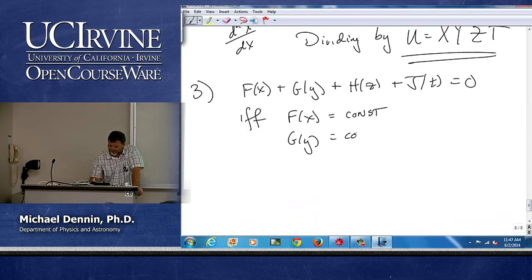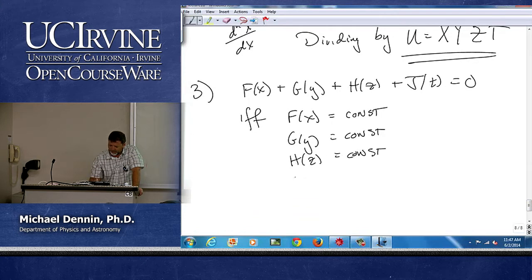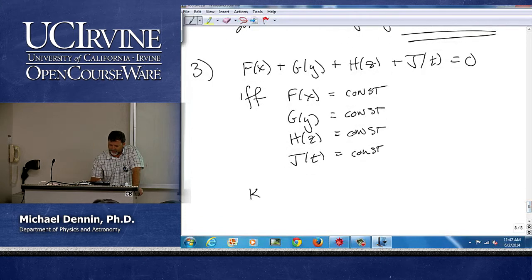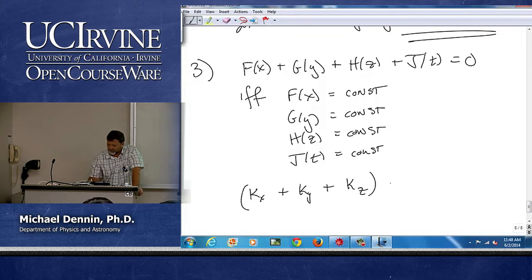g of y equals a constant, h of z equals a constant, and j of t equals a constant. And so we might write this as k sub x plus k sub y plus k sub z minus lambda equals zero.